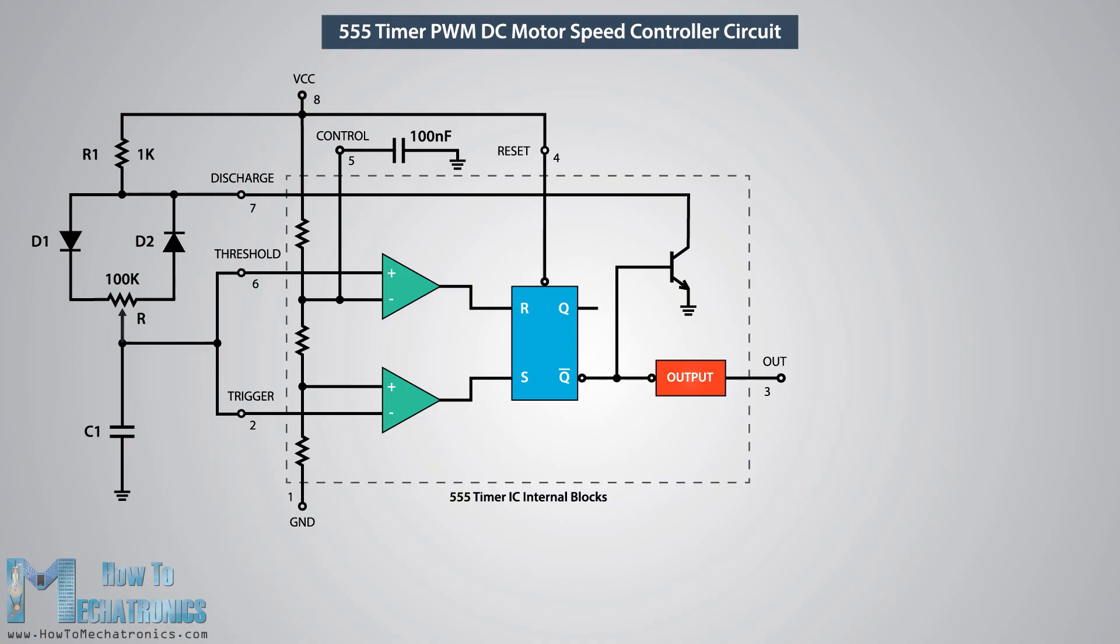The output of the 555 timer can sink or source a current of 200mA to the load. So if the motor that we want to control exceeds this rating, we need to use a transistor or a MOSFET for driving the motor.